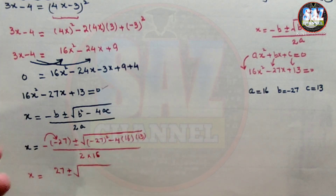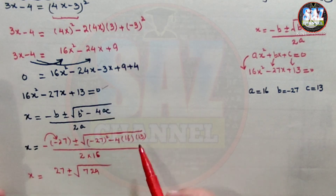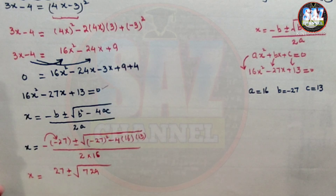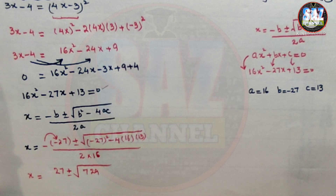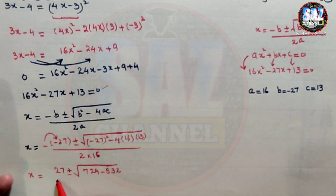Let me recheck: 27 multiplied by 27 equals 729. And for 4ac: 4 times 16 times 13 equals 832. So under the radical we have 729 minus 832, which equals minus 103. The denominator is 2 times 16 equals 32.